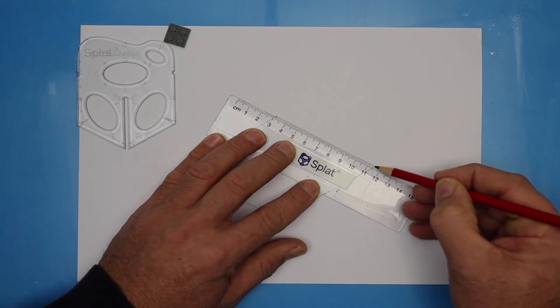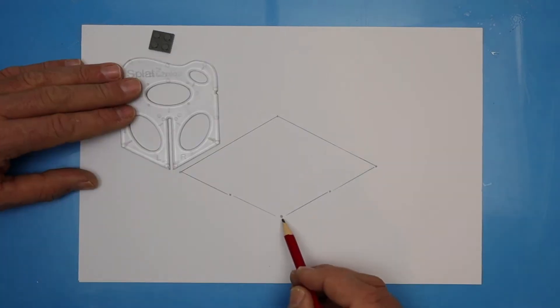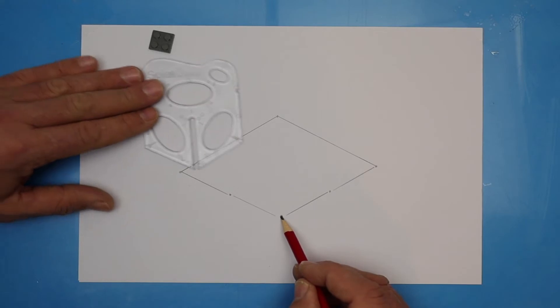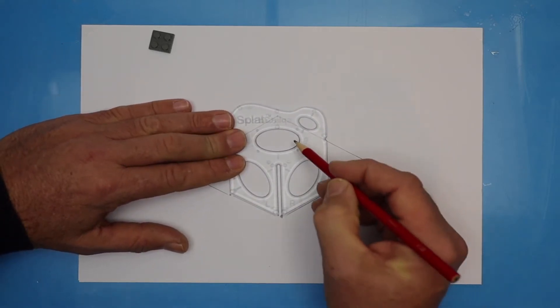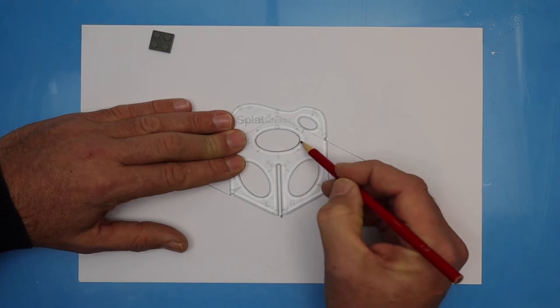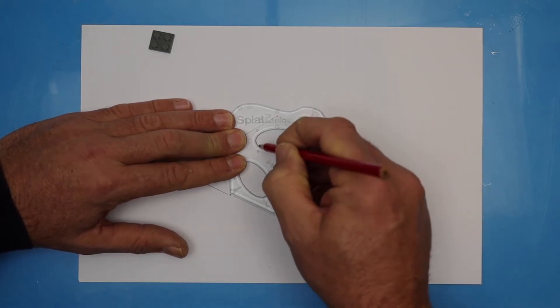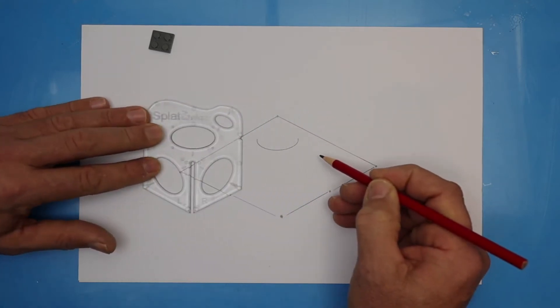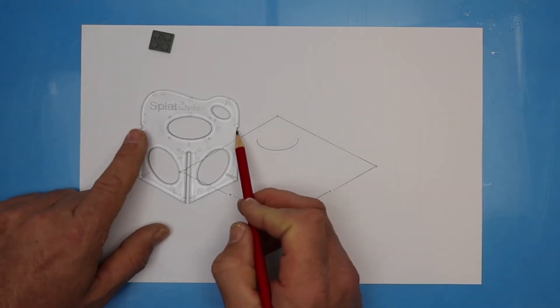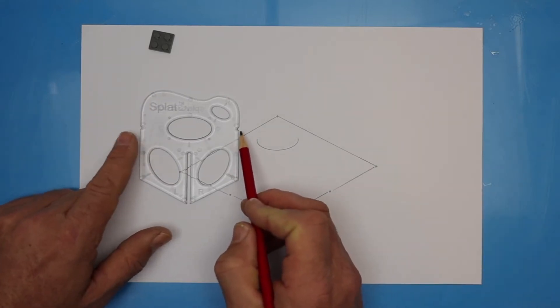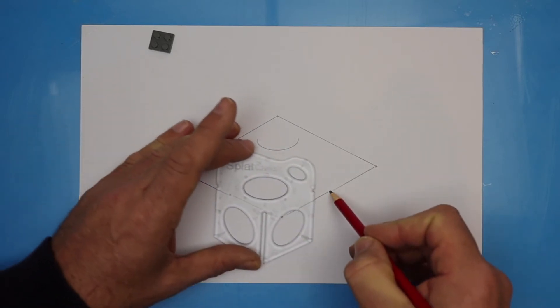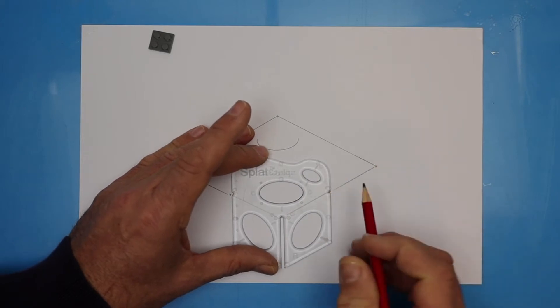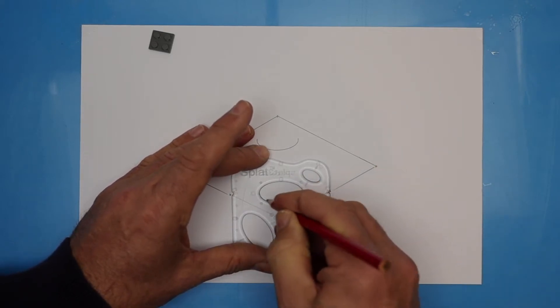Now we draw the four studs on top. First, find the original starting mark and place the tip of the splat on it. Trace around just the bottom half of the ellipse. Just the bottom half. Good. Now find the two little blips and line those blips up with those two dots. Cool. Let's see how that looks. Once lined up, again trace the bottom half.